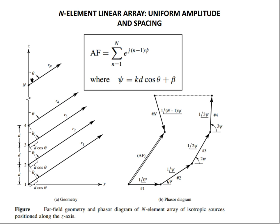Now, this is the geometry for N number of elements placed in a linear fashion along the Z-axis, with uniform distance between each element. Suppose one volt or one watt of power is applied, so the amplitude of excitation is the same — it is uniform. The controlling factor we are discussing here is beta, which is the phase difference between each successive element.